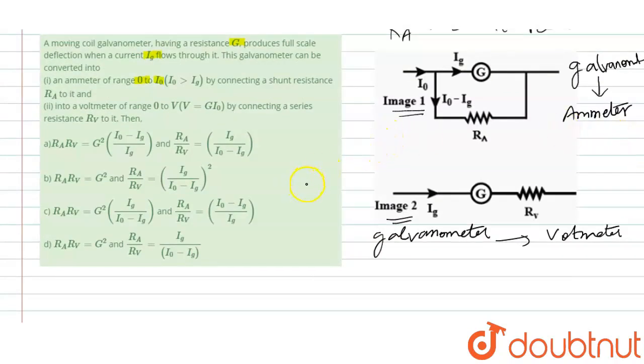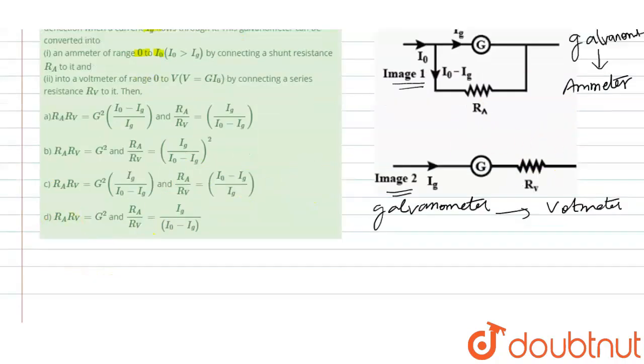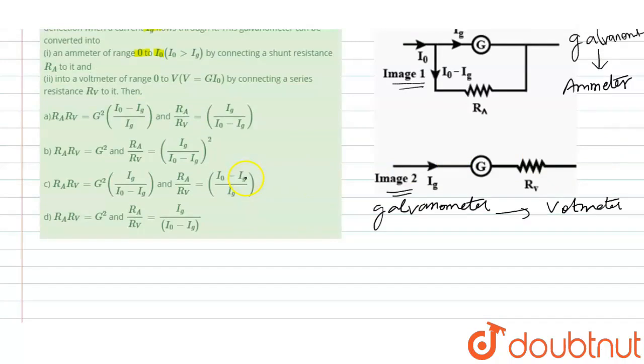Now when you convert a galvanometer to an ammeter by shunting in parallel, what happens? The effective resistances are going to be in parallel, right? The galvanometer resistance and the shunt resistance, both are going to be in parallel. So accordingly, when we apply the loop law, we will get the equations as IG times G is equal to I0 minus IG times RA.